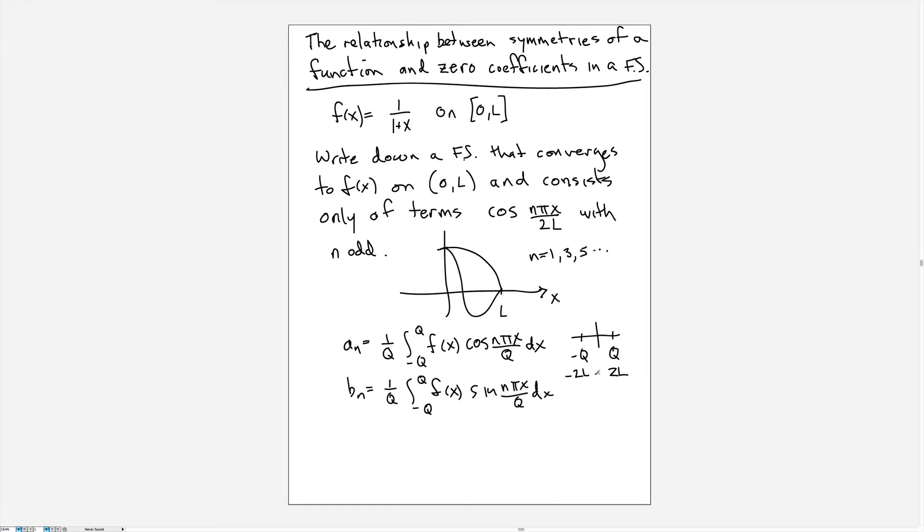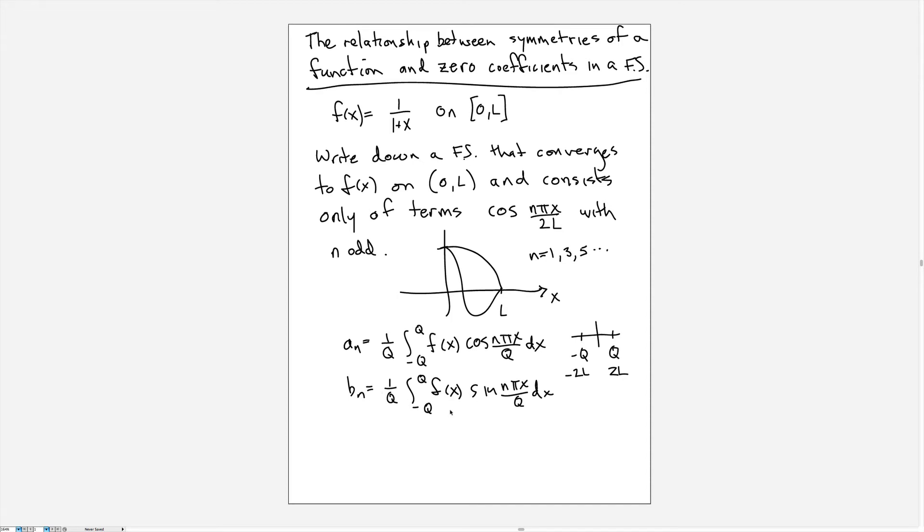Now what we're going to do is extend it beyond 0 to L in a clever way so that the sine terms have 0 coefficient and so that the cosine terms are 0 whenever n is even. Let me make it explicit that f is not the same function as above—it's an extended version that's now defined all the way from minus q to q, and we should state explicitly that we're going to choose q equal to 2L.